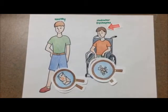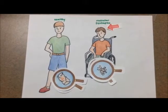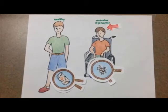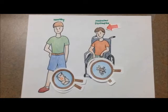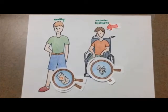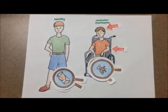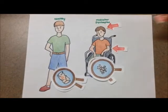Symptoms of this disorder include progressive muscle weakness of the legs and pelvic muscles, loss of muscle mass causing a waddling gait and difficulty climbing stairs. Muscle weakness also occurs in the arms, neck, and other areas.